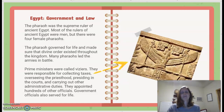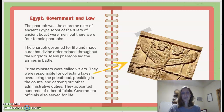Egypt Government and Law: The pharaoh was the supreme ruler of ancient Egypt. Most rulers were men, but there were four female pharaohs. The pharaoh governed for life and made sure divine order existed throughout the kingdom. Many pharaohs led armies in battle. Prime ministers, called viziers, were responsible for collecting taxes, overseeing the priesthood, presiding in the courts, and carrying out other administrative duties. They appointed hundreds of other officials, and government officials also served for life.